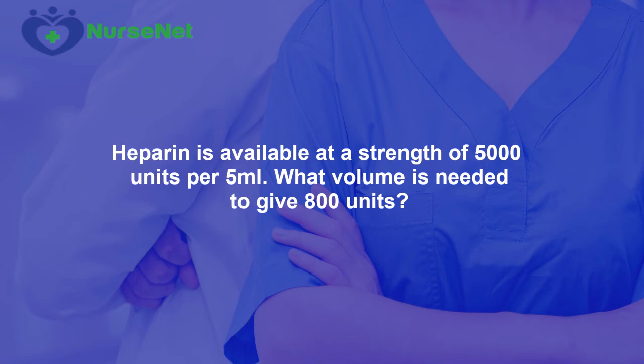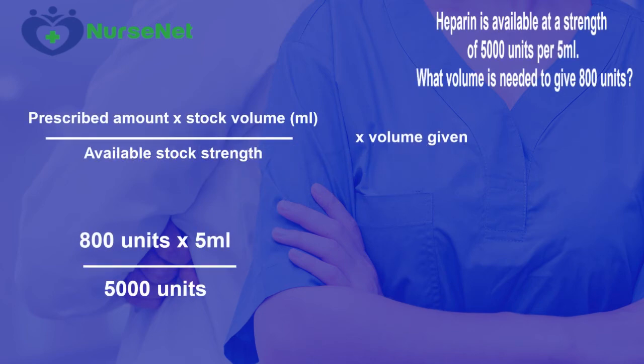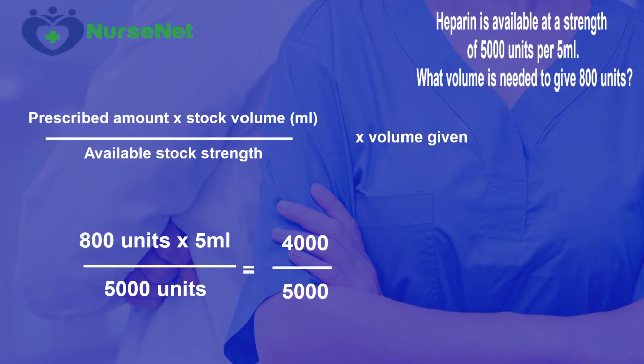So we can simply input these numbers into our formula. That's the prescribed amount of 800 units, multiplied by the stock volume — in this case, 5 ml — and that's all divided by the available stock strength, in this case, 5,000 units. So we've got 4,000, since 800 multiplied by 5 is 4,000.